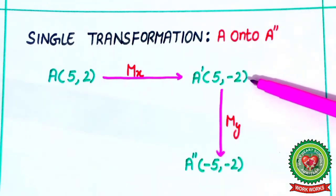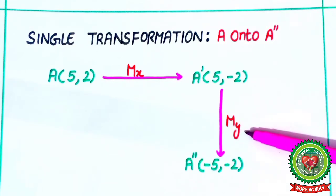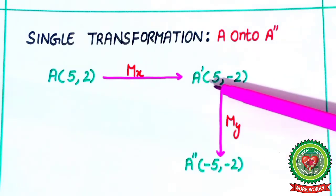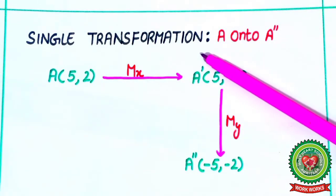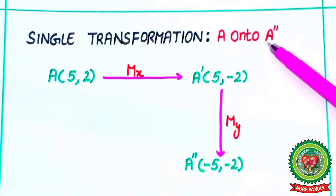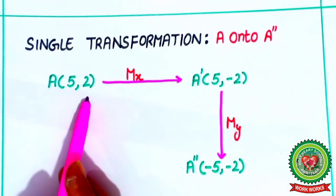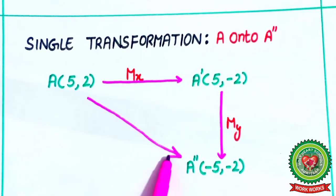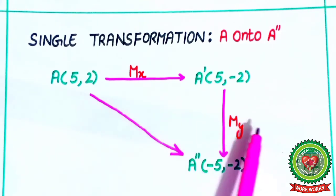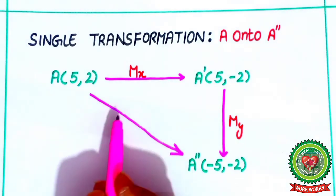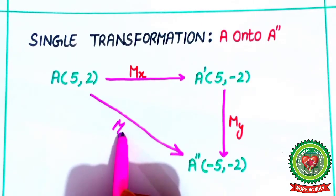Now A' is reflected to y-axis. After reflection in the y-axis, changes will come in the abscissa sign. So A'' is (-5, -2). We have to find single transformation here — A onto A''. Firstly, reflection in x-axis is there, then y-axis. Now only origin is left, so here, reflection in the origin.